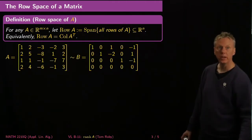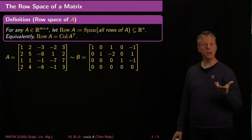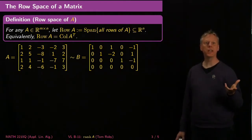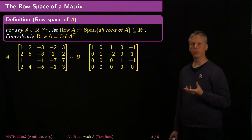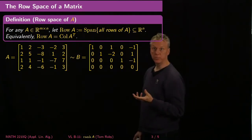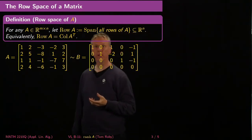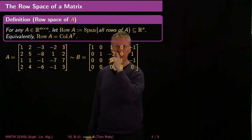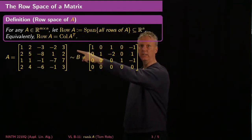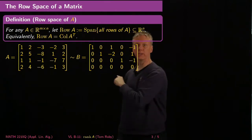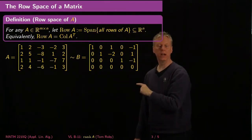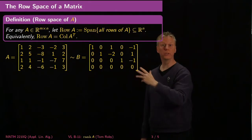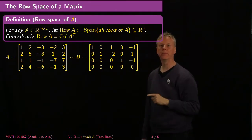Let's look at an example. We're going to spend a little bit of time on this example because analyzing it carefully will give us exactly the result we want to explain. I've got a four by five matrix, and the row space of A is spanned by these four vectors. As we often do, we try to understand the matrix better by putting it into row reduced echelon form, which I display here.